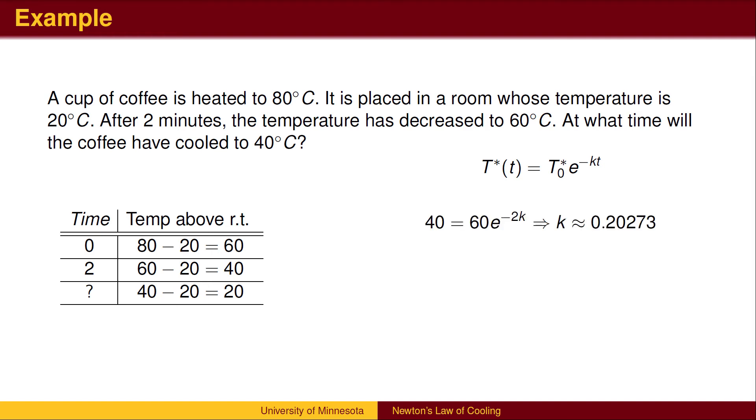We can now use our exponential model to find k using the information when t equals 2. We use the initial temperature, the time, and the temperature at time t equals 2 to find that k is approximately 0.20273. Once we know the value of k, we can use it, along with the initial temperature and the final temperature, to find that the time at which the coffee reached 20 degrees above room temperature is approximately t equals 5.42, or about 5 minutes and 25 seconds.